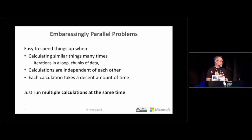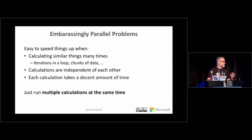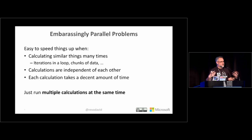foreach applies to the embarrassingly parallel kind of problem — basically the situation where you have a simple loop where one iteration doesn't depend on the previous one and they can be run independently. Common situations include by-group analyses, running an analysis for different chunks of data in parallel. The important thing is that each chunk of calculation takes a somewhat significant amount of time — things that run in milliseconds won't benefit much, but things that take a second, ten seconds, a minute or an hour will.